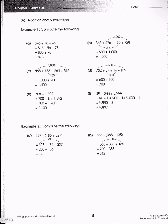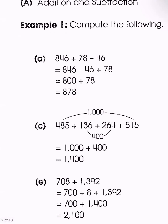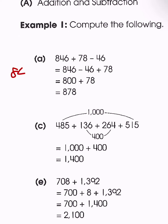Now we'll move on to practicing addition and subtraction. For the first example, we have 846 plus 78 minus 46. We're going to do the addition first and then go with the subtraction in order. Following in order will work at all times, but we want to find easy ways to do the calculation without complicating the arithmetic.